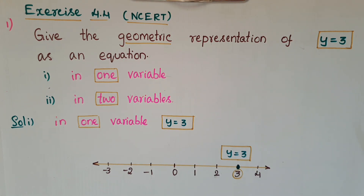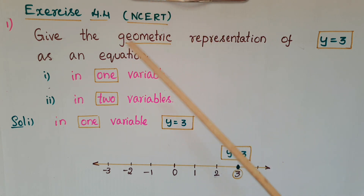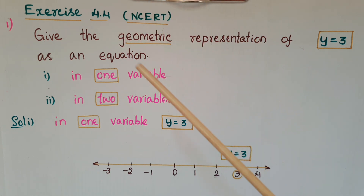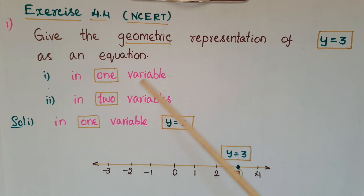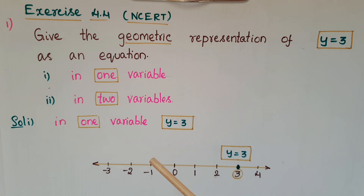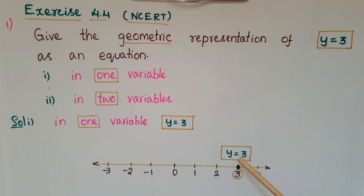Hello everyone, today I am going to tell the solutions of Exercise 4.4 from NCERT. The first question is: give the geometric representation of y equals 3 as an equation in one variable and in two variables. In one variable, we represent it on a number line, so draw the number line and mark the point at 3. This is y equals 3.